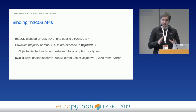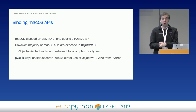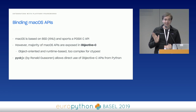Now that we've talked about generic APIs, let's go into each platform. Starting with Mac — while it does have a POSIX API because it's BSD-like, the vast majority of its APIs are actually written in Objective-C. These are object-oriented, they have a runtime, memory management — you have to do reference counting. So not really the best thing to try to integrate at the ctypes level. Even though you technically could, that's probably a bad idea.